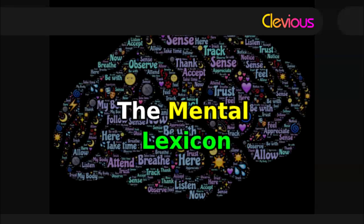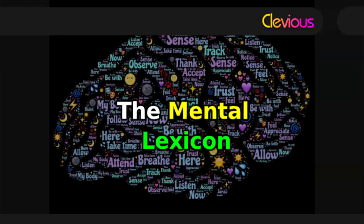Dictionaries only allow one to access words by their alphabetically ordered spelling, which is often accidental in a language and does not allow for them to be accessed by any of their other properties, e.g., their meaning (Fellbaum, 1998). What the more flexible models of the mental lexicon try to do is explain the patterns and regularities that underlie people's knowledge and, sometimes irregular, use of words.